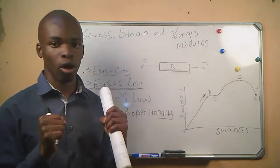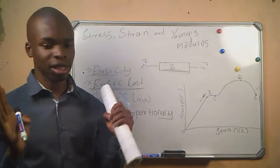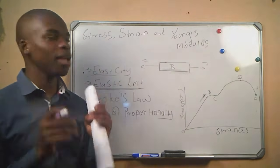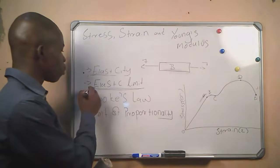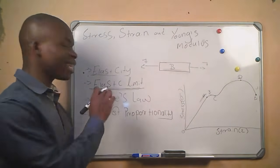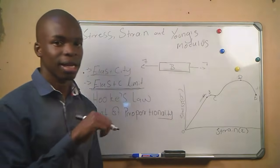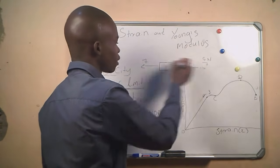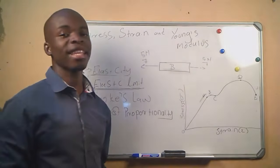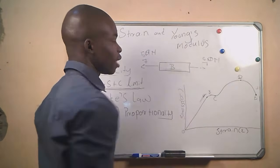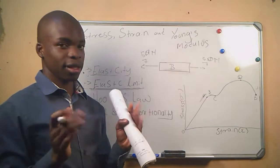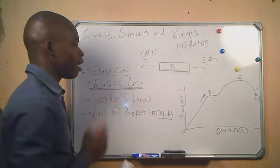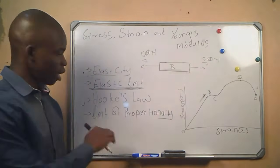Elastic limit is the point where the object cannot go back to its original form. If we apply a reasonable force to the spring and then remove it, the spring will return to its original form. But if we apply a much greater force, after the force is removed, the spring will no longer return to its original form. For example, if we apply five newtons and then 50 newtons, and after removing 50 newtons the object cannot return, we say the force exceeded the elastic limit.